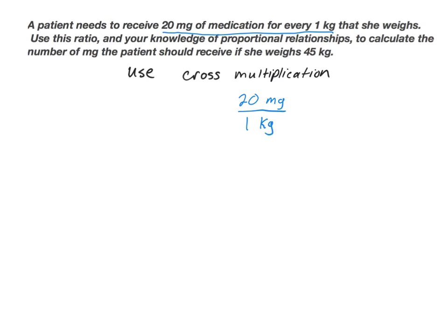We're going to use this ratio and our knowledge of proportional relationships to calculate the milligrams the patient should receive if she weighs 45 kilograms. I know that the patient weighs 45 kilograms, so I'm going to use that information to begin writing another ratio where instead of having one kilogram in the denominator, I now have 45 kilograms.